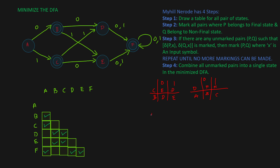For E and A — on input 0, from E you go to F and from A you go to B; F and B are both final states, don't mark. On input 1, from E you go to F and from A you go to C — both final states, don't mark. For E and D — on input 0, from E you go to F and from D you go to F as well, and the same applies for input 1 — both go to F, so you don't mark this either.